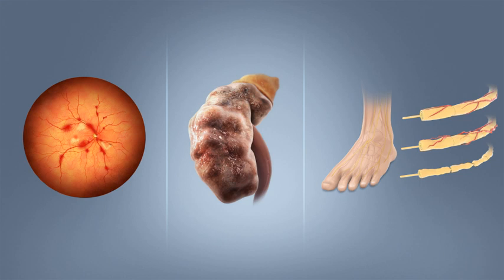Damage to the kidneys, known as diabetic nephropathy, can lead to tissue scarring, urine protein loss, and eventually chronic kidney disease, sometimes requiring dialysis or kidney transplantation. Damage to the nerves of the body, known as diabetic neuropathy, is the most common complication of diabetes.